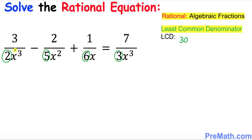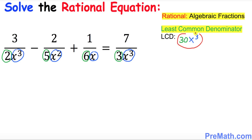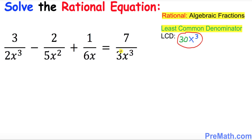Now focus on the x variable. We have x cubed, x squared, x, and x cubed. What is the highest degree among these powers? The highest power is x cubed — always look for the highest power. So our least common denominator turns out to be 30x cubed.